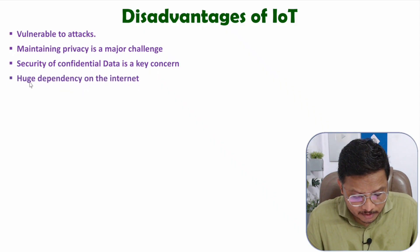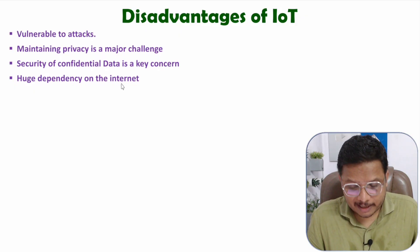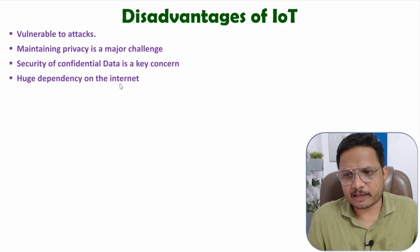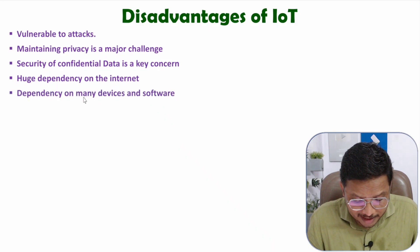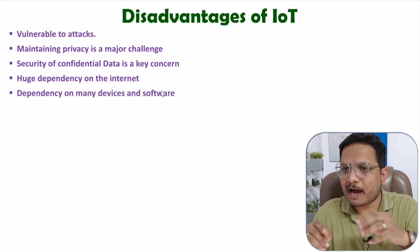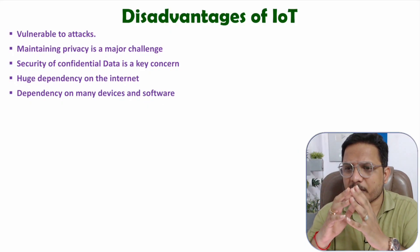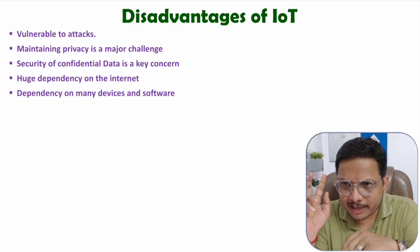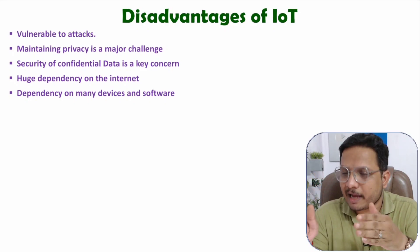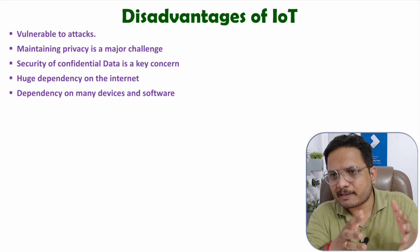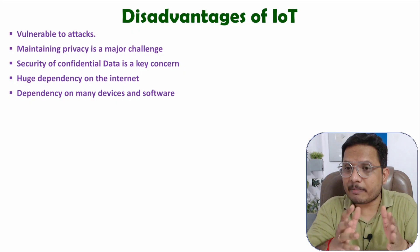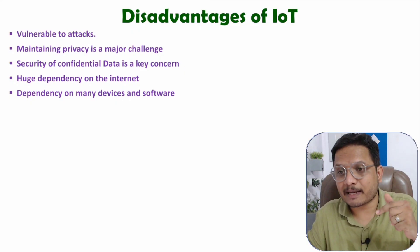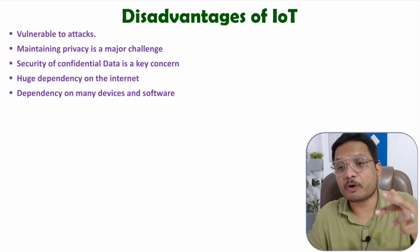When we talk about dependency of these applications, they are purely based on the internet only, so there is a huge dependency on the internet and that is why issues are generated. Dependency is also there on many devices and software. IoT systems have a hardware part and a software part. The major software part is on the internet where algorithms are running, and at the hardware side there is also dependency — there will be sensors, there will be embedded systems. So there is dependency on internet as well as on the hardware part. If sensors are failing, then your system may not work properly.